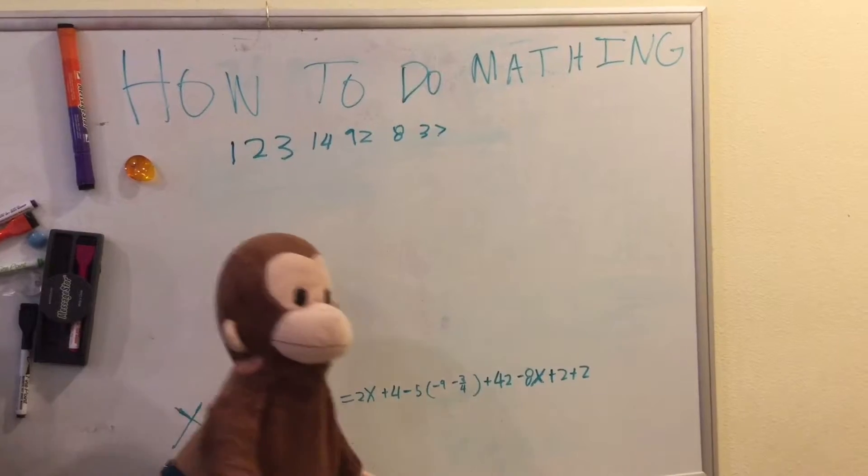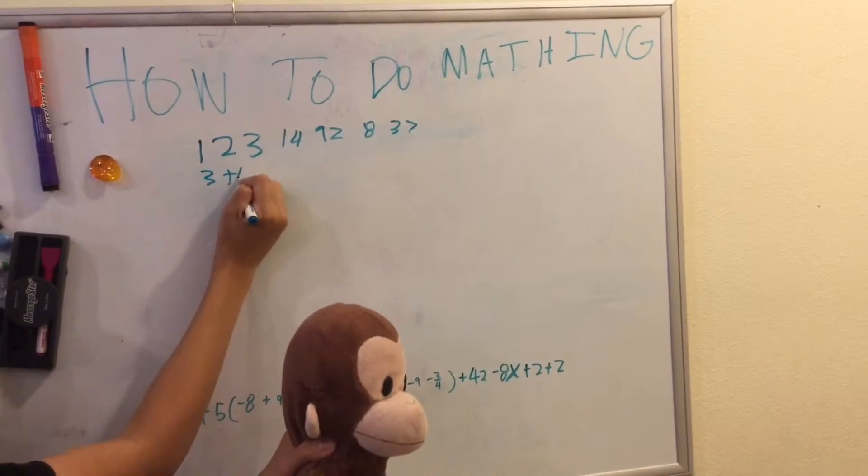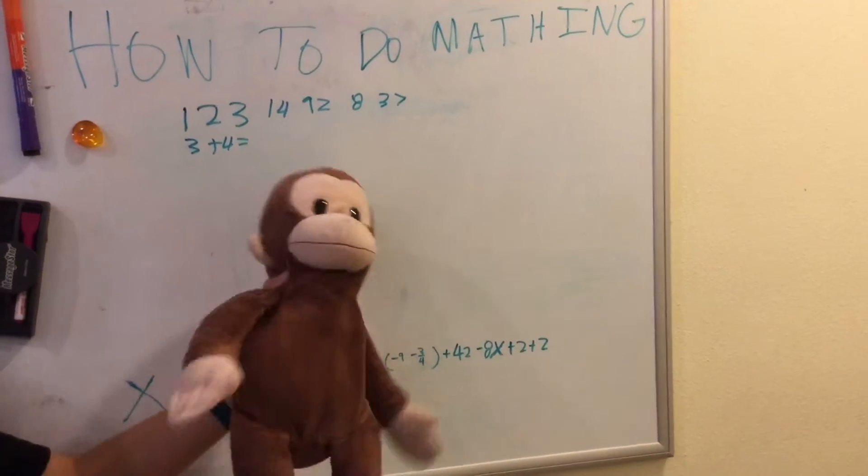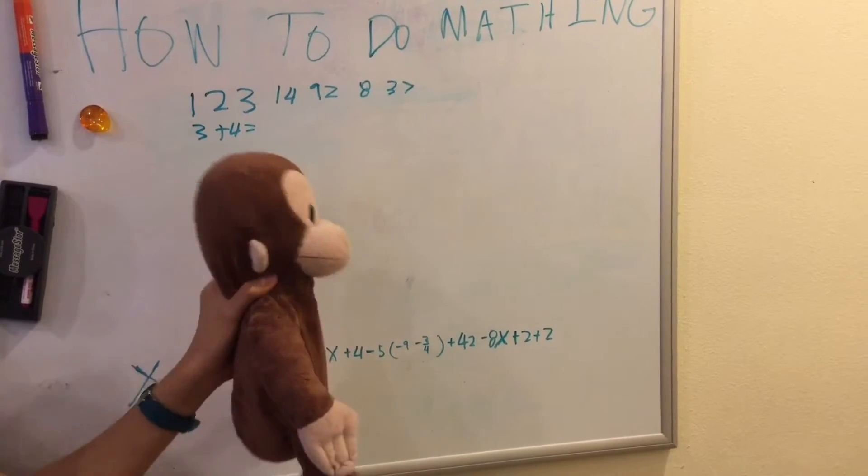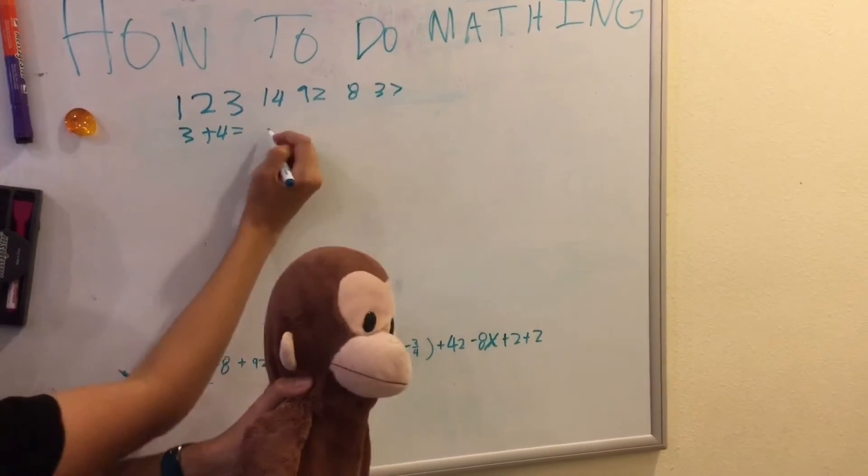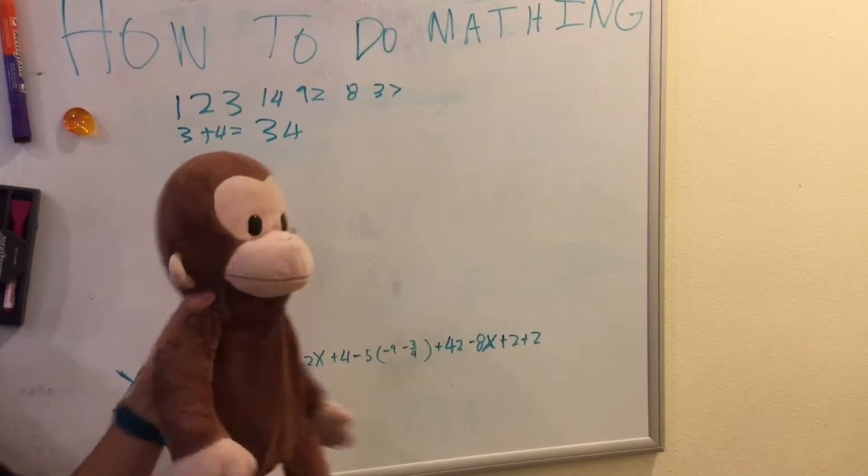Okay, after that, let's go to addition. Three plus four, what's that you say? Really easy. Nope. Well, it's not what you think it is. It's actually 34. You just add the two numbers together.